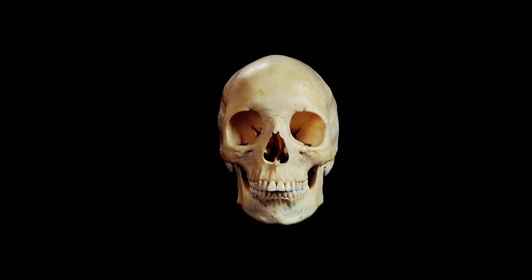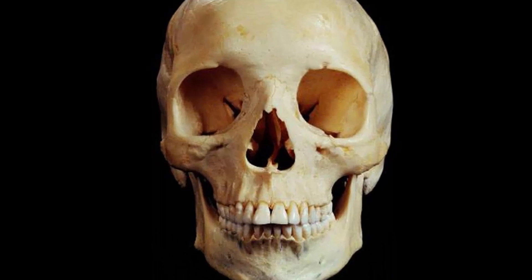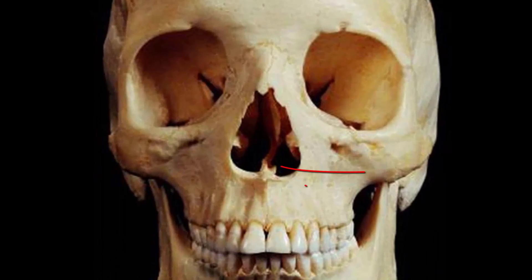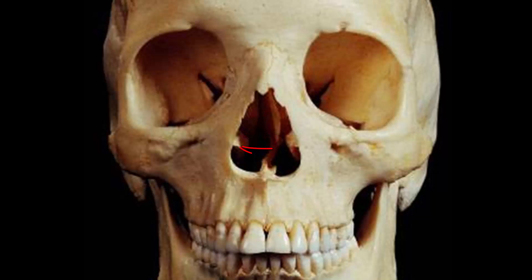Looking inside the nose, we see a couple of structures. At the bottom we have the vomer, and above the vomer we have the perpendicular plate of the ethmoid. Off to the sides, we have the inferior and middle nasal conchae.